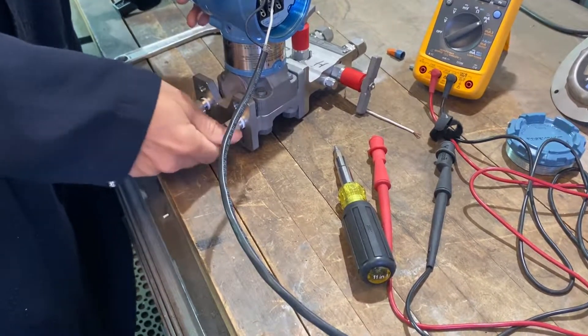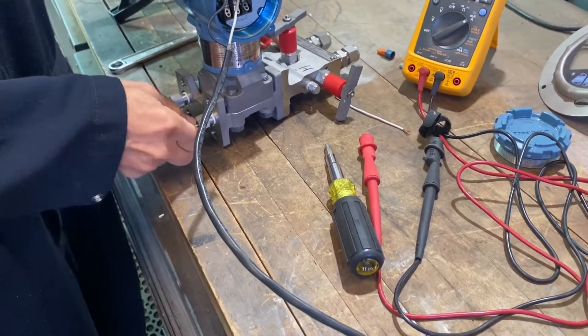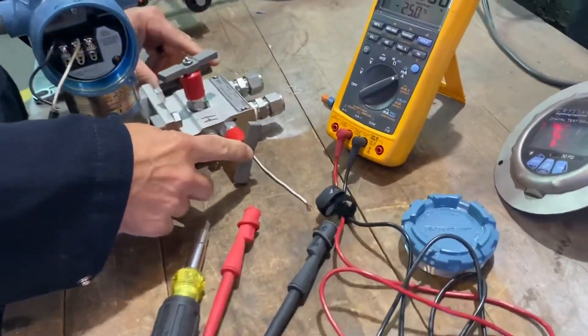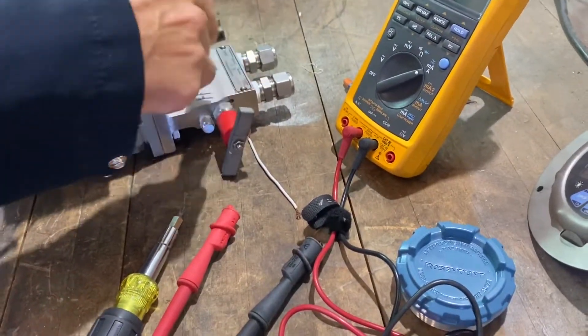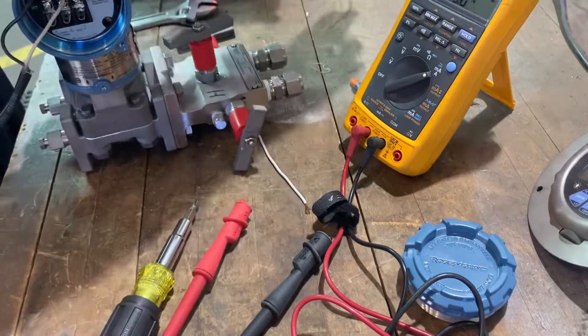The other thing is, if you don't have this manifold, you block it at the root valves. You must have some kind of valves between your meter and your process.